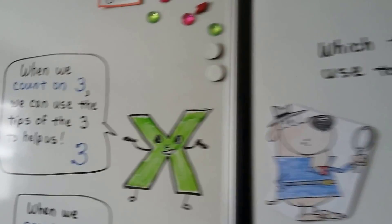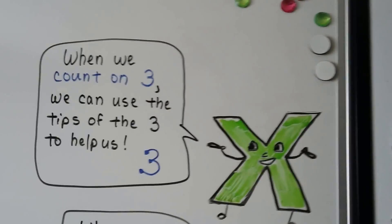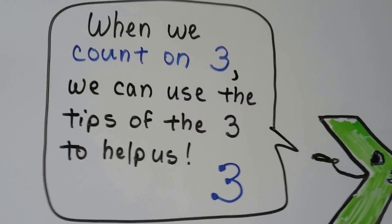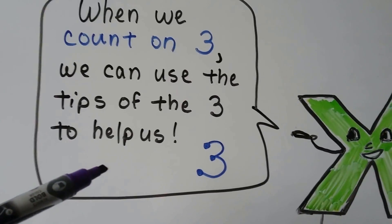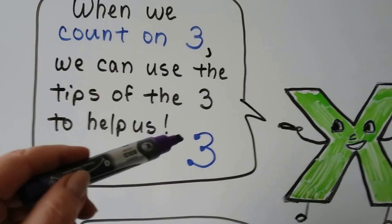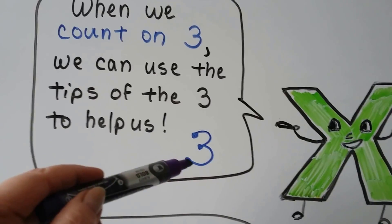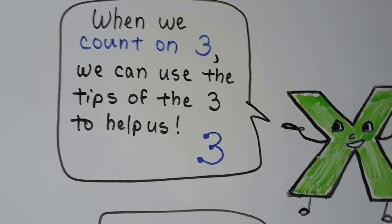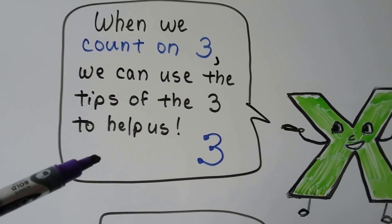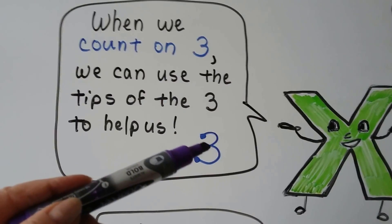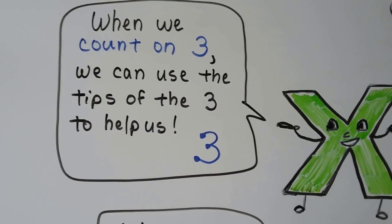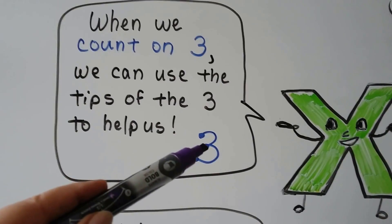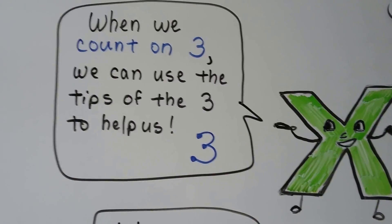When we count on 3, we can use the tips of the 3 to help us. If we have 6 and want to count on 3, we say 6, 7, 8, 9 — because there are 3 tips on the 3. We can say 12, 13, 14, 15, or 8, 9, 10, 11. The tips help us count on 3.